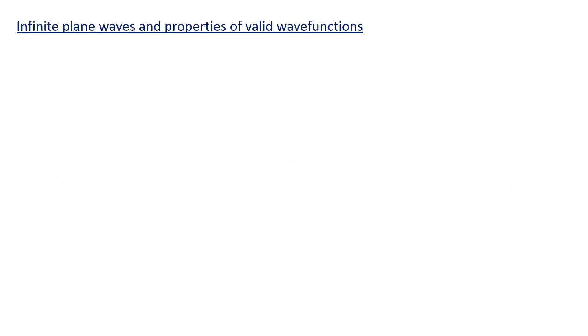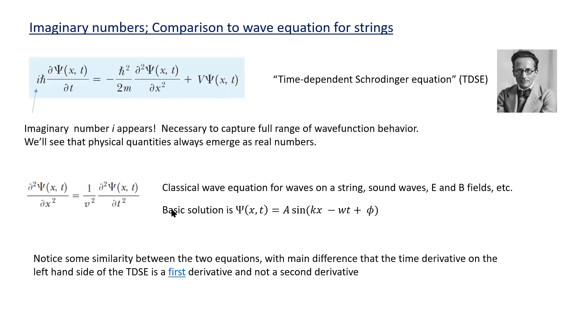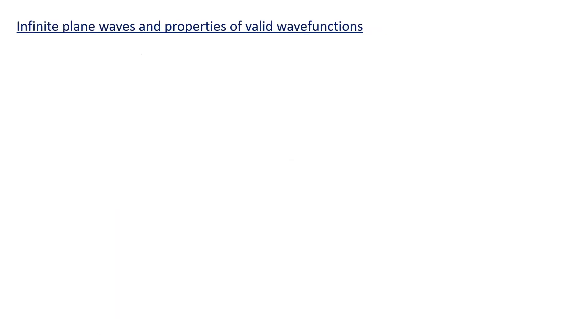What are some of the solutions we deal with by analogy to this basic solution, a sine of kx minus ωt plus φ for the classic wave equation? Well, it turns out since there's an i in the time-dependent Schrödinger equation, the basic solution is a complex plane wave. So it's an overall constant times e^(i(kx - ωt)). You'll recognize the kx minus ωt, but the e^(i(kx - ωt)) might seem a little unfamiliar.